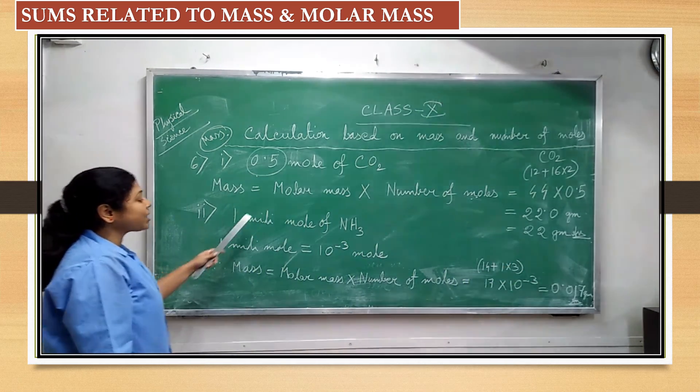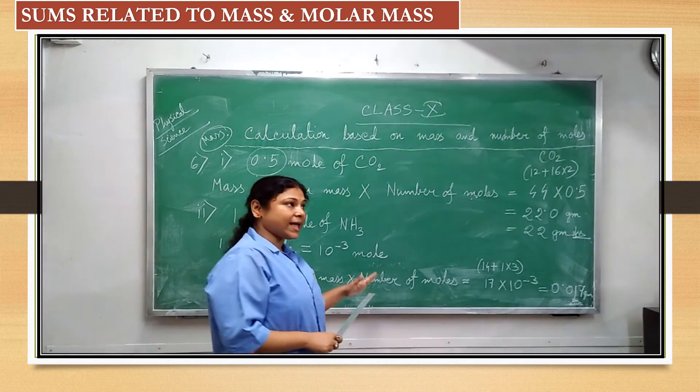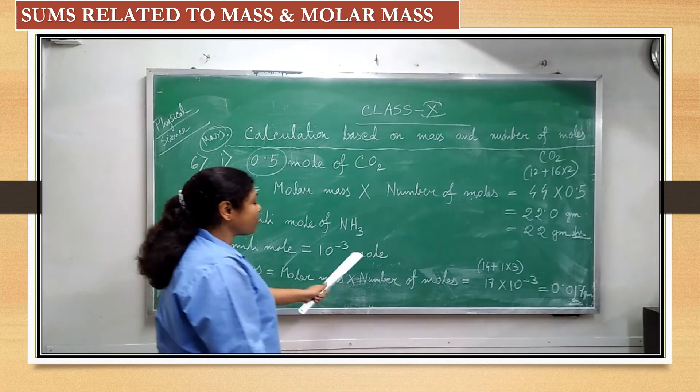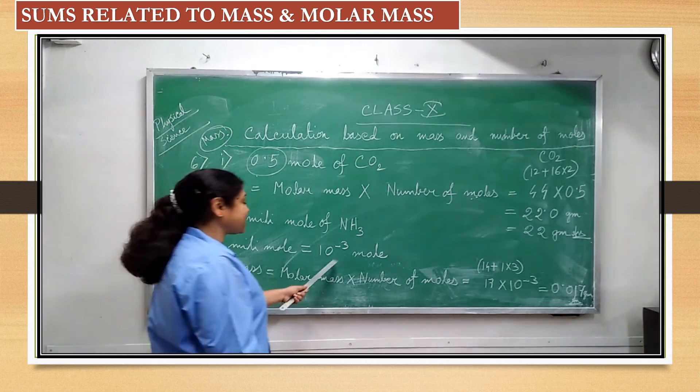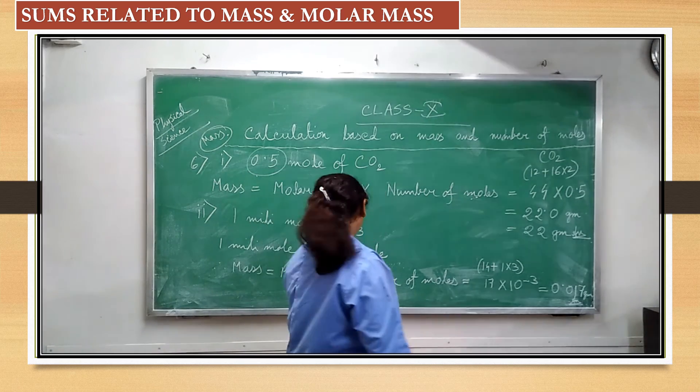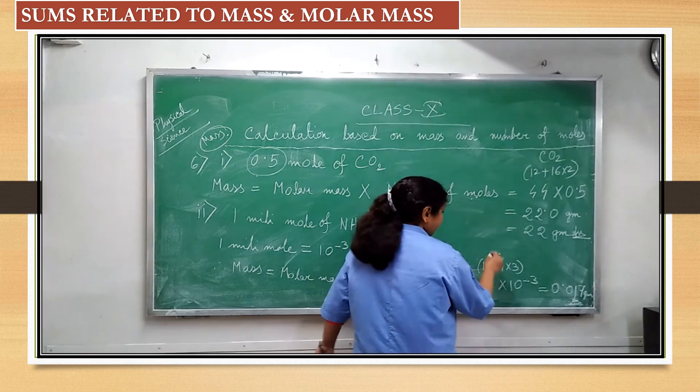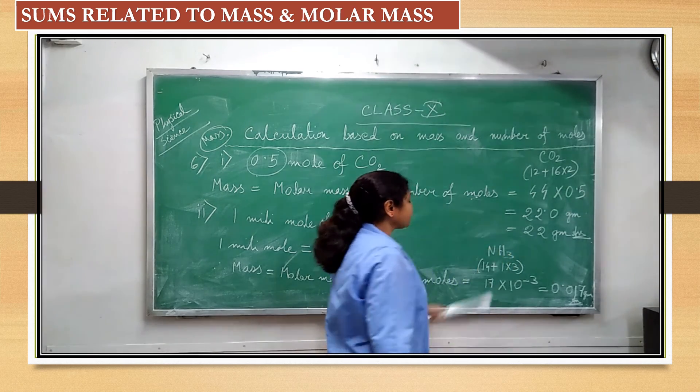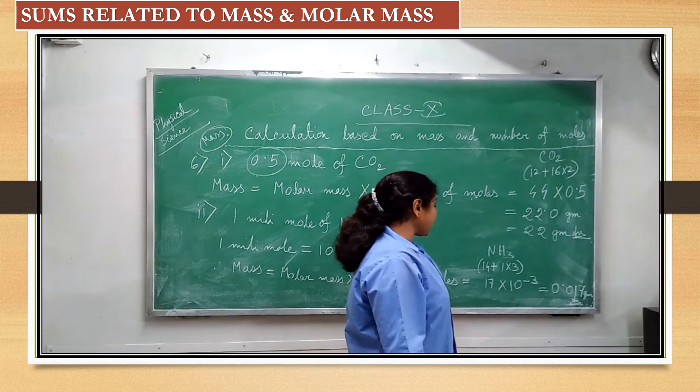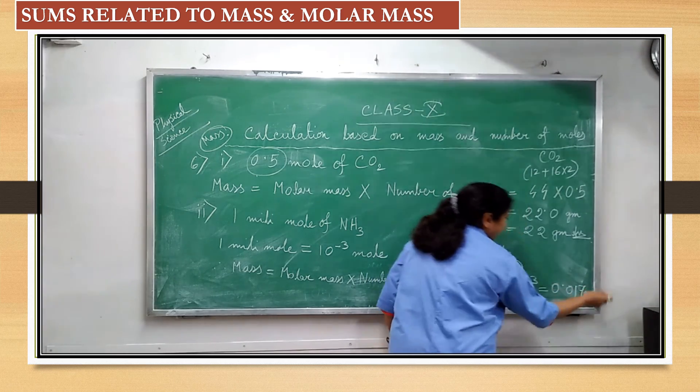Now, the next step. Next step is number 2. 1 millimole of NH3, millimole. First, we are converting millimole into mole. Like you can say like a millimeter into meter. So, 1 millimole is equal to 10 to the power minus 3 moles. 1 millimole is equal to 10 to the power minus 3 moles. Same formula is applicable: mass is equal to molar mass into number of moles. So, molar mass or molecular mass or molecular mass of NH3, this is equal to 17. How is it coming? I have written the calculation over here also for NH3. It's hydrogen 1 into 3. Nitrogen is 14. So, 17 into 10 to the power minus 3. It's coming 17, 3 decimals, it will come like this: 1, 2, 3. So, 0.017 gram. And this is the answer.